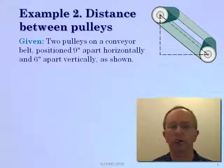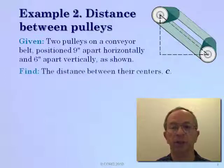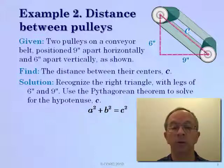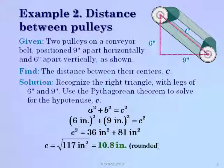Let's look at example 2: a real world problem where we need to find the distance between two pulleys that are 9 inches apart horizontally and 6 inches apart vertically, as shown in the sketch. We need to find the distance between their centers. Drawing a sketch, we have 6 inches vertically and 9 inches horizontally as the two legs. Using the Pythagorean theorem: A squared plus B squared equals C squared. Substituting 6 inches and 9 inches, squaring and adding, then taking the square root of both sides, C equals 10.8 inches.